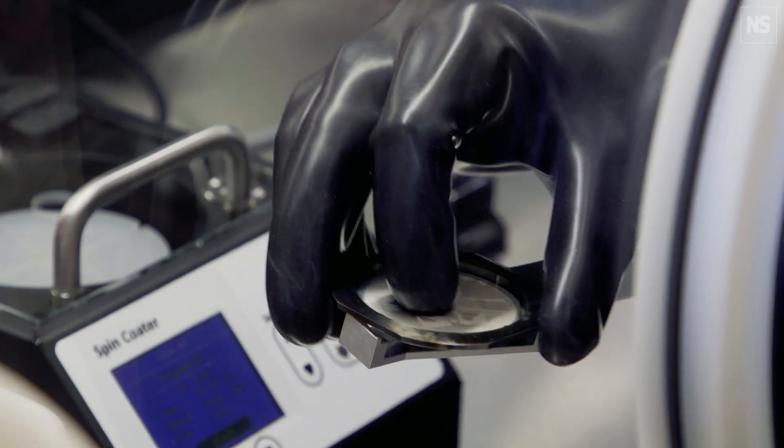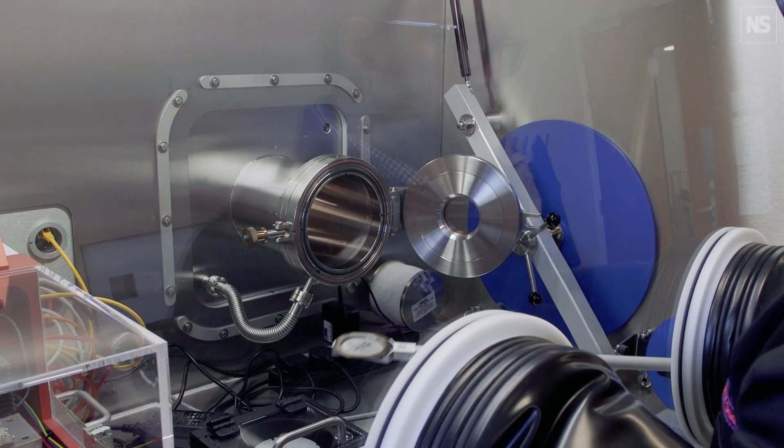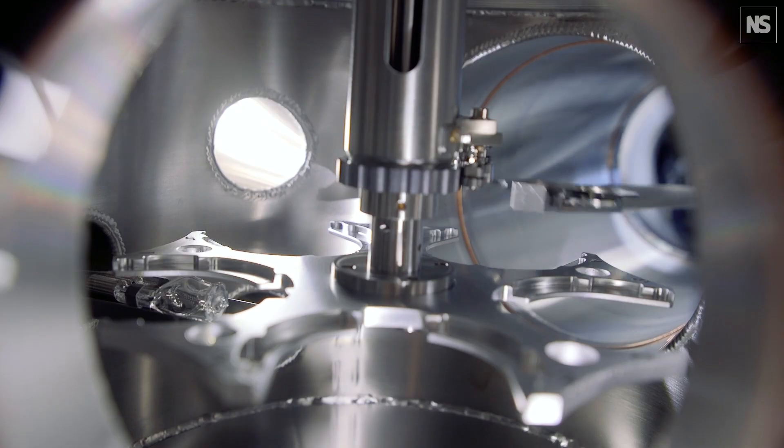The next step is to dissolve the polymer, and it only dissolves where we wrote the pattern. So we are left with a hole in the shape of a violin. We then take the chip and transfer it to the deposition chamber, where we deposit a platinum layer.